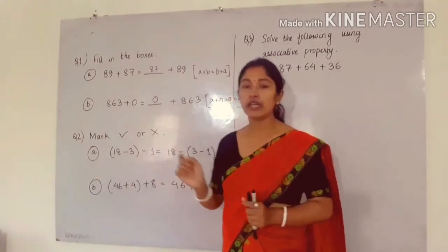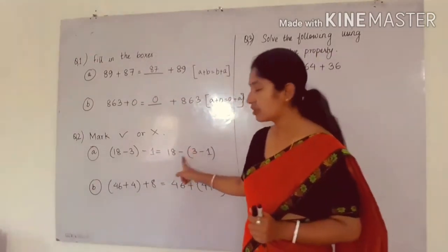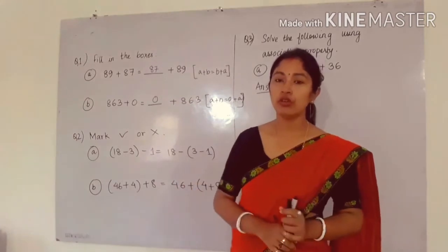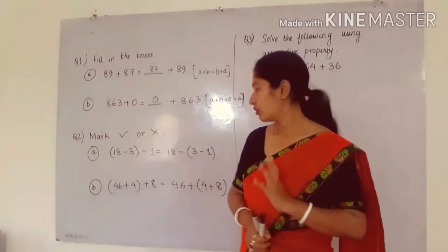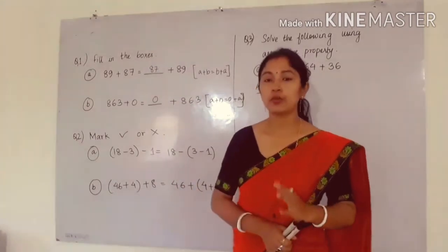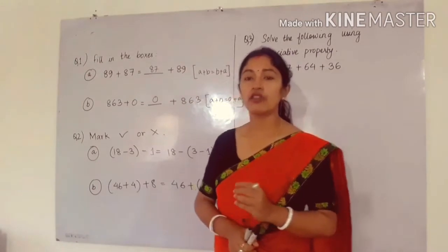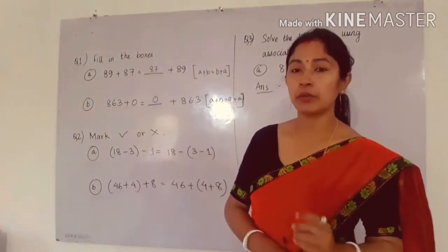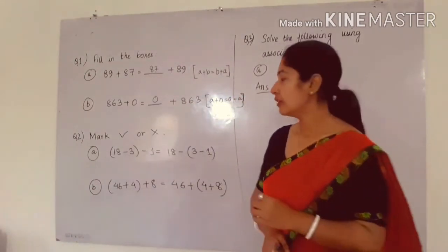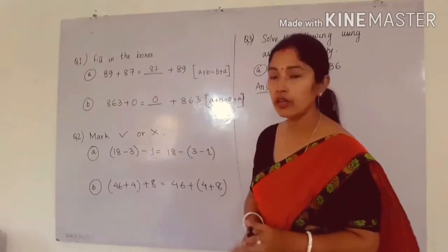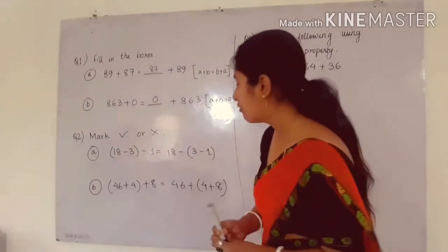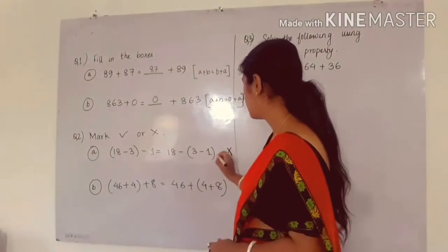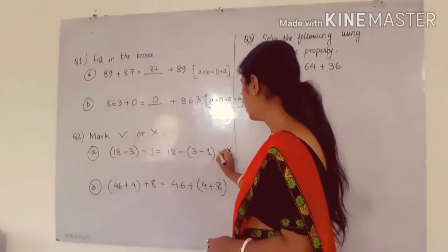We already know that associative property in subtraction does not hold true. So this property is false in case of subtraction — it is not satisfied in case of subtraction. That means this statement is also false.